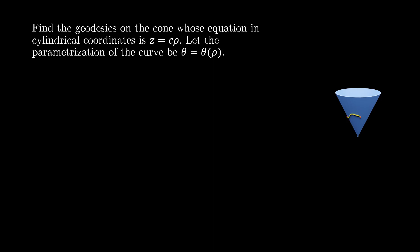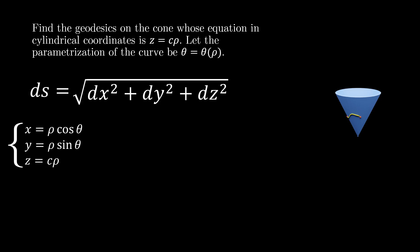We'll begin by noting that in Cartesian coordinates, the infinitesimal arc length ds is the square root of the sum of the squares of the infinitesimal lengths in the x, y, and z directions. We can convert between cylindrical and Cartesian coordinates with the three equations x equals rho cosine theta, y equals rho sine theta, and z equals c rho as given in the problem statement.